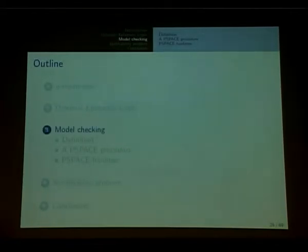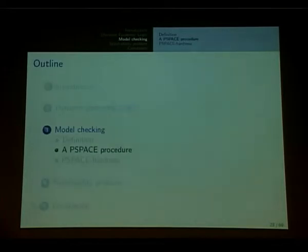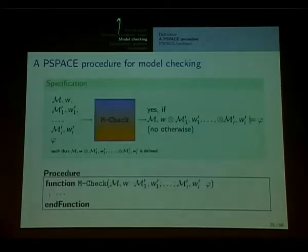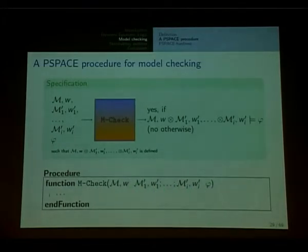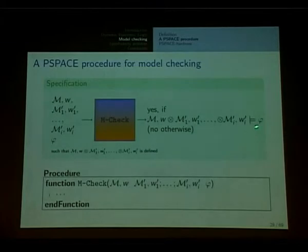Now we are ready to tackle model checking. The definition: as input, we have an epistemic model and a formula; the output is yes if the model satisfies the formula, and no otherwise. For a PSPACE procedure, I introduce more inputs — also a list of event models. The specification is that when you make the product it's well defined. We have a formula phi and output yes if this product satisfies phi, and no otherwise. The initial problem is just when this list is empty.